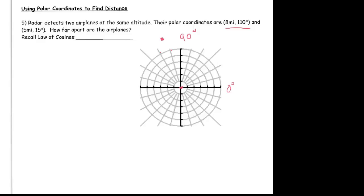So there is 8 miles at 110 degrees — that point right there is (8, 110°). The other plane is at 5 miles at 15 degrees. That's more straightforward because 15 degrees is marked right here, so I just need to go out to 5, which brings me to here. So there I am at (5, 15°) — that's the other plane.